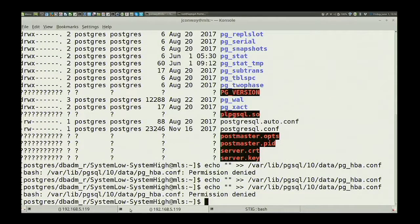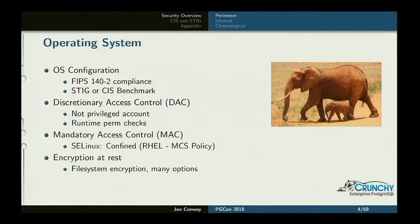This allows you to provide two-person control, which is becoming more and more important — especially at Crunchy, where we deal with government agencies and large companies in regulated industries. They need this level of control over how Postgres is configured and used. At the OS level, you can also provide encryption at rest by encrypting the file system. There's no built-in method for encryption at rest in Postgres other than PG Crypto, which is manual. Typically, if you need to comply with PCI or HIPAA, that's the solution you'll go for.